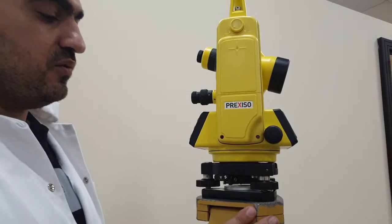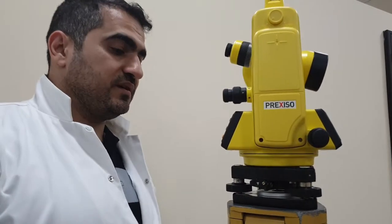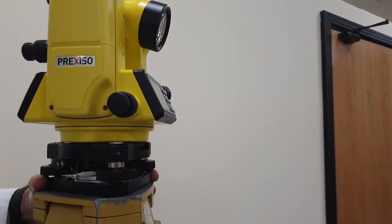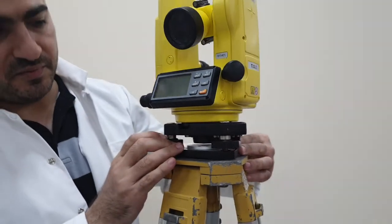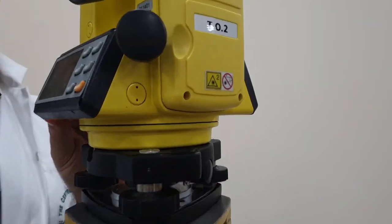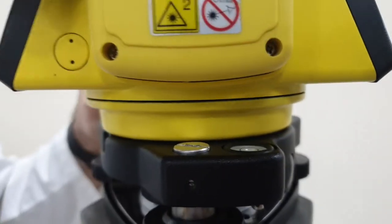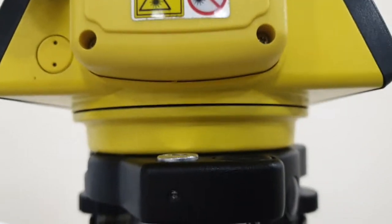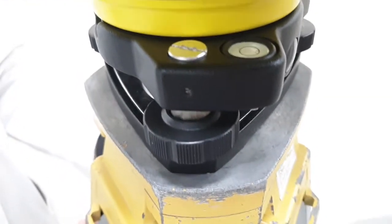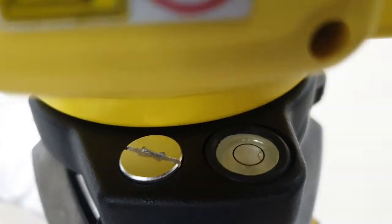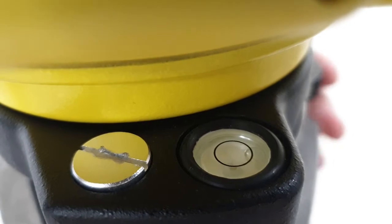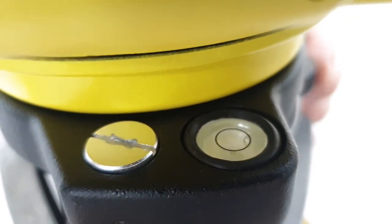So the device now is placed on the tripod. Now the next step we need is to level the device. Let me just turn it so we can see the bubble. We close the clamp. Now you can see the bubble is not leveled correctly.